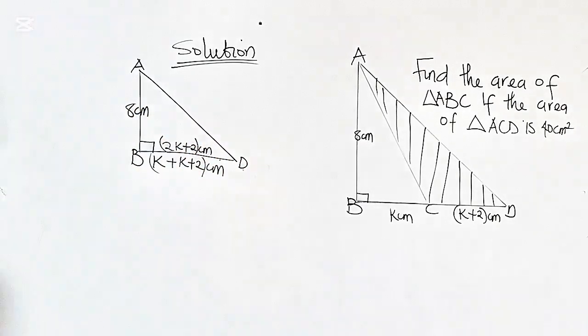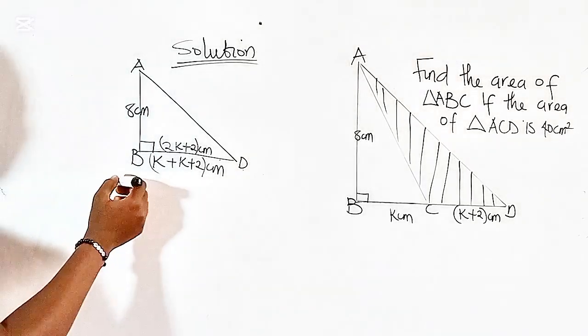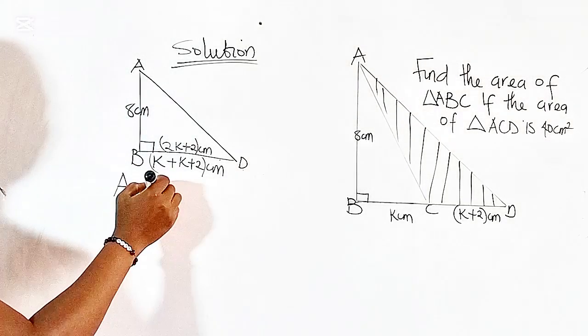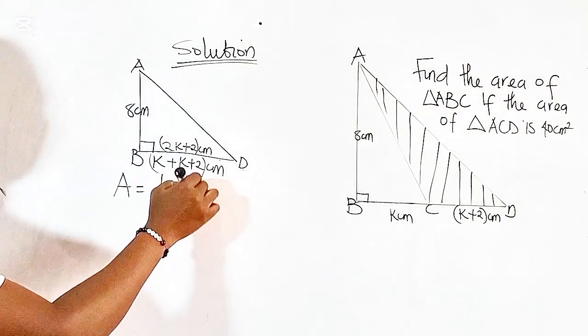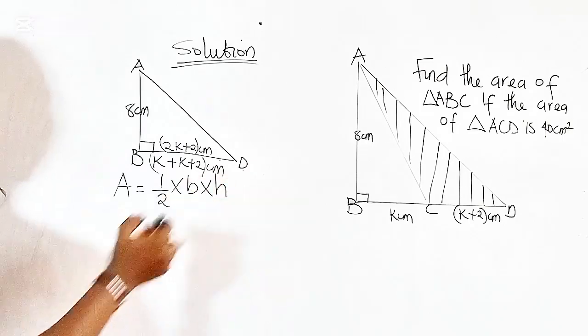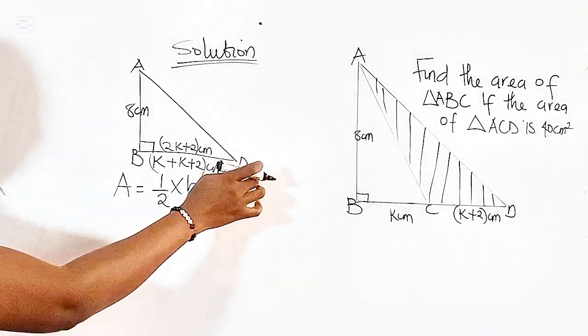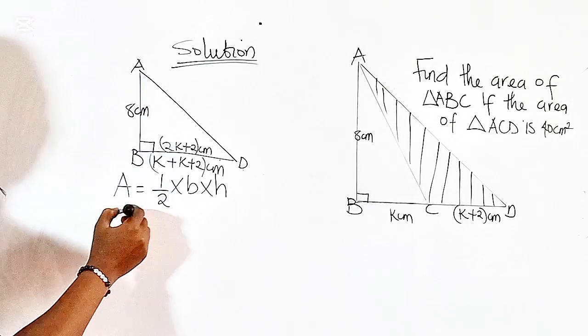So to calculate the area of this triangle, we are going to use this formula: area of the triangle, which is half times base of the triangle times the height. So the base of this triangle is BD, which is 2K plus 2.